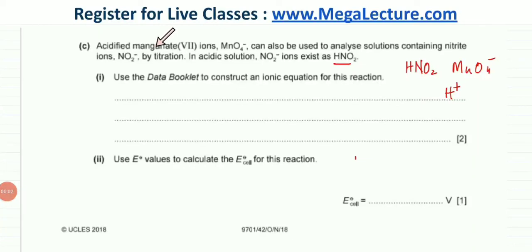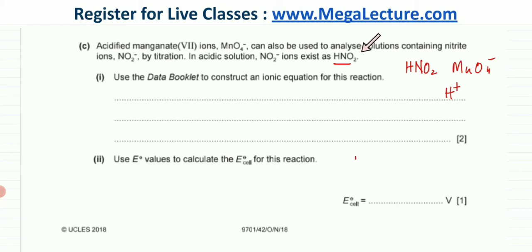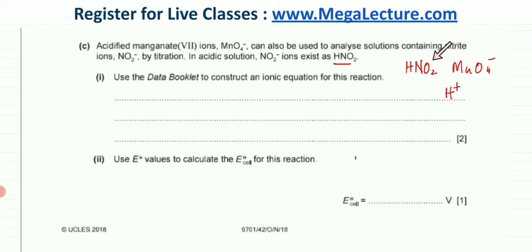The question states that acidified permanganate ions (MnO4⁻) — acidified meaning presence of H⁺ — can be used to analyze solutions containing nitrite ions (NO2⁻). This is a titration in acidic solution, and it states that NO2⁻ exists as HNO2 molecules. We are asked to use the data booklet to construct the ionic equation for this reaction. The three things we're told: the solution is acidified, there are MnO4⁻ ions, and NO2⁻ exists as HNO2.